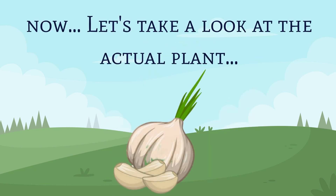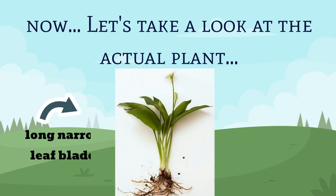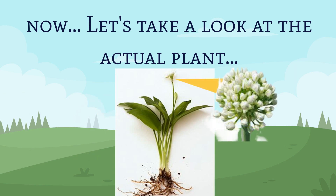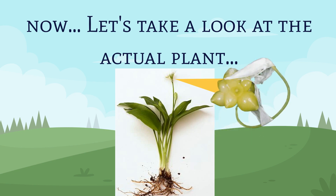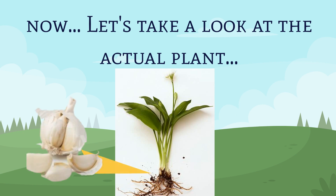First, let's take a look at the garlic plant. Garlic has long, narrow blades similar to grass. Garlic's flowers bloom at the end of a stalk, and it forms small bulbils or cloves of garlic at the end of the stalk. The root of the garlic plant forms a large bulb consisting of numerous cloves grouped together and enclosed in a white skin.